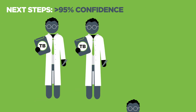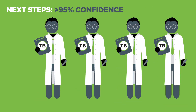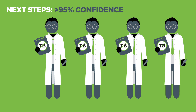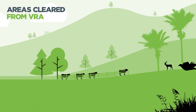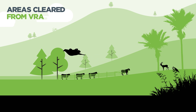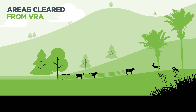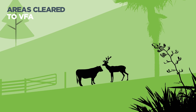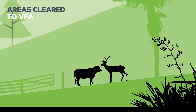Once the Proof of Freedom model indicates 95% confidence that TB is absent, a panel of experts consider declaring an area free from TB. When an area is declared free from TB, vector risk areas are reclassified as vector free areas, and pest control will cease for TB purposes.